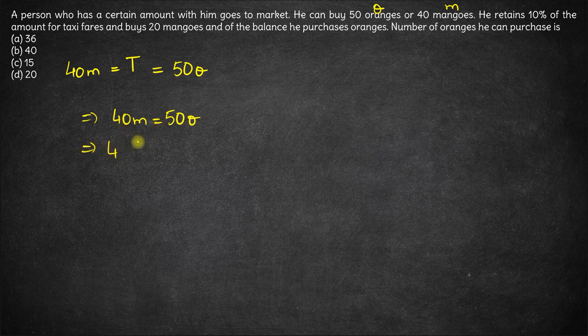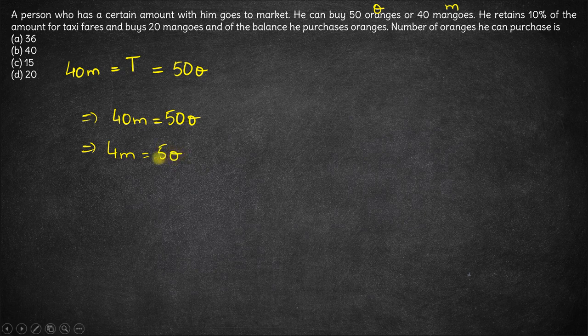Cancelling out a factor of 10, we have 4M equals 5O.